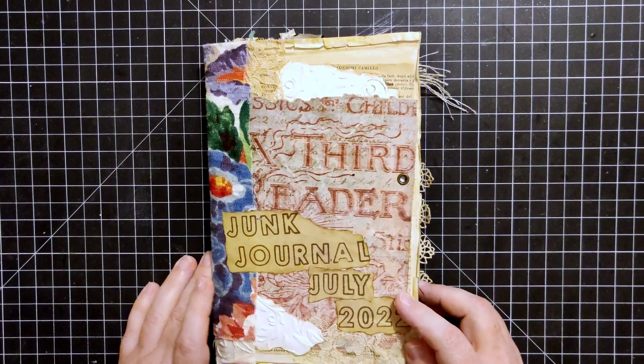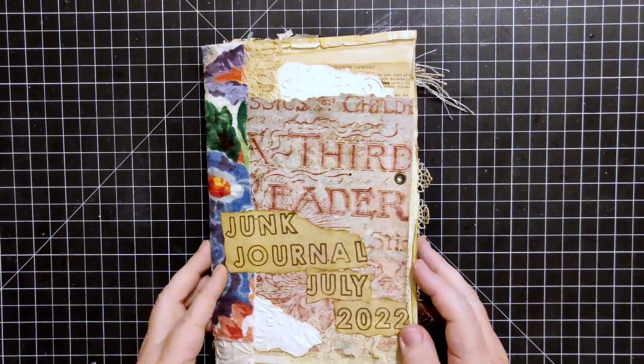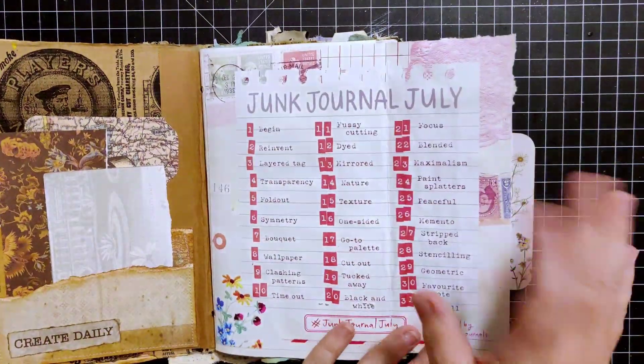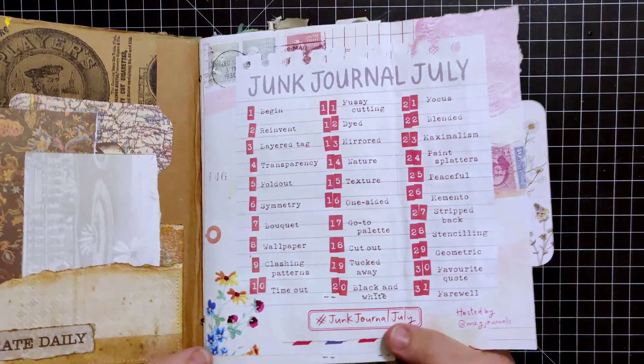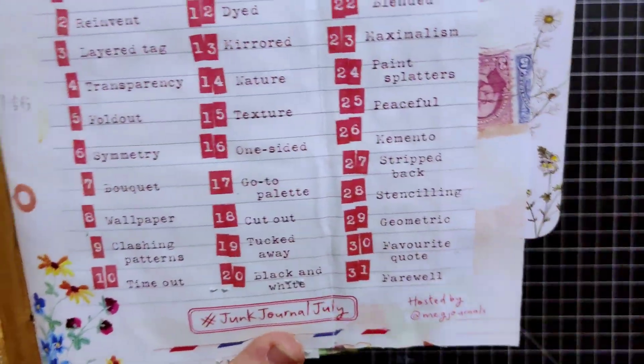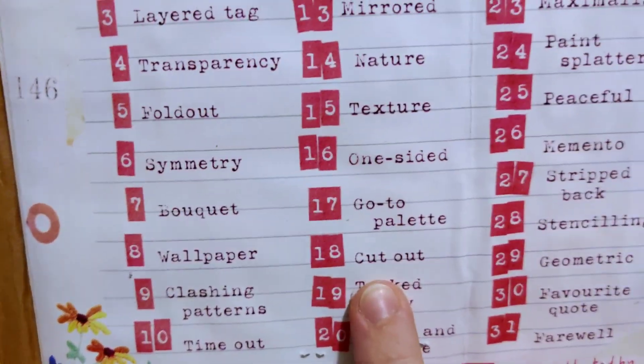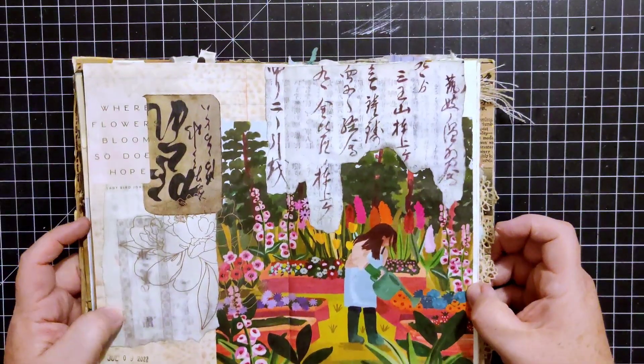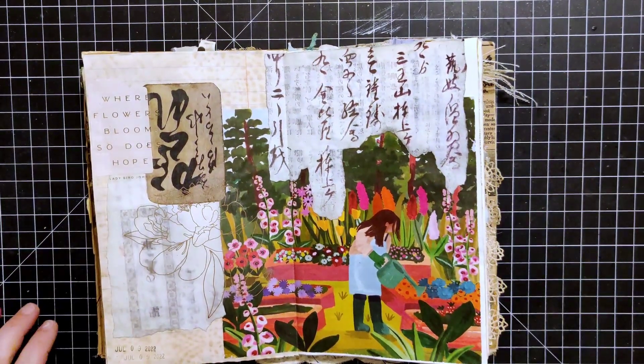Hey everybody, welcome back to Plum Figgy, this is Tammy. It's Junk Journal July time. I'm a day behind, so I need to get myself caught back up again. Today we're working on day 18, the prompt is cut out.